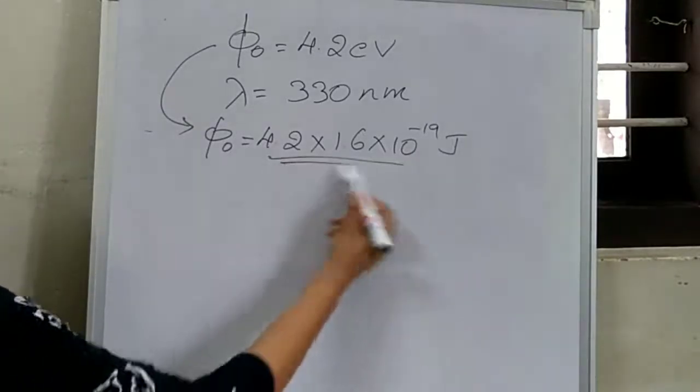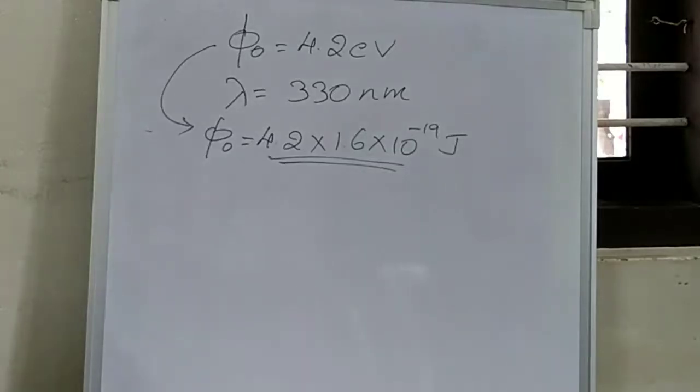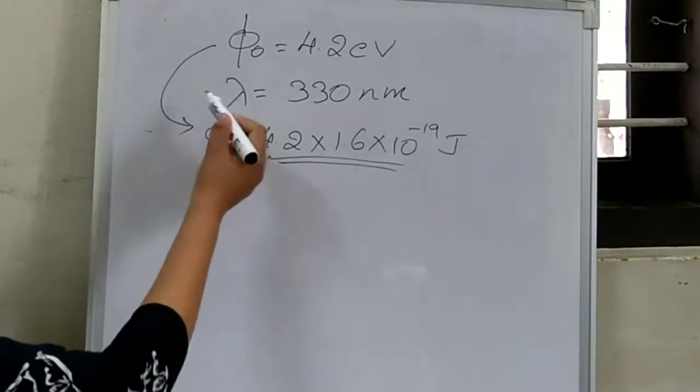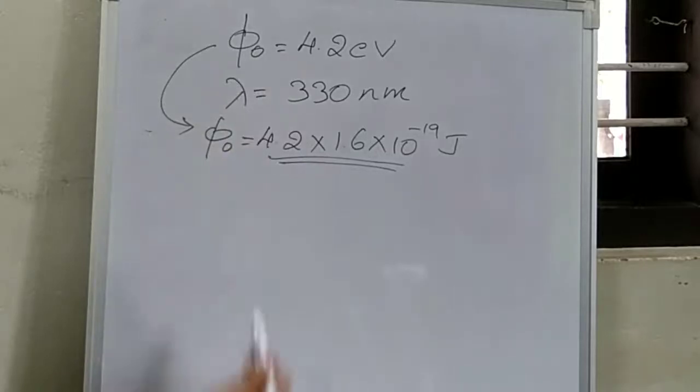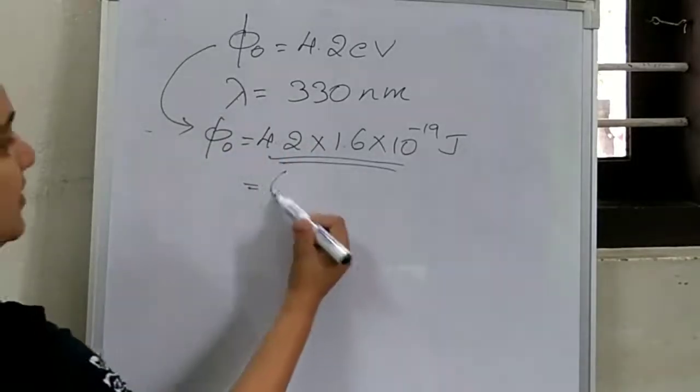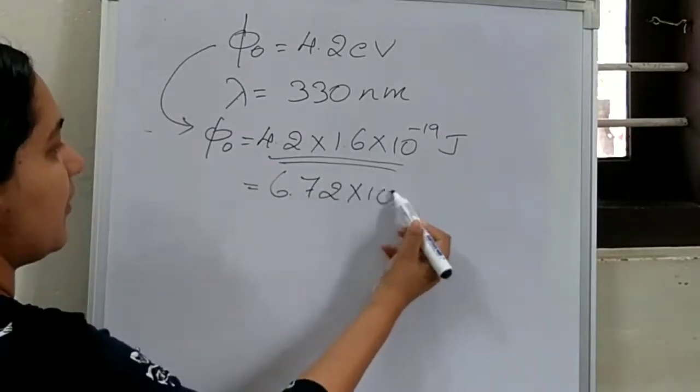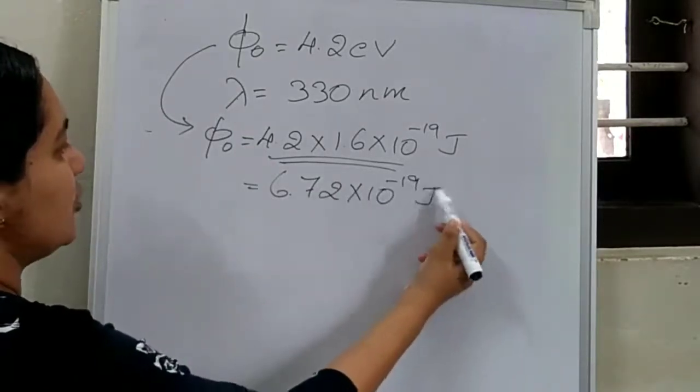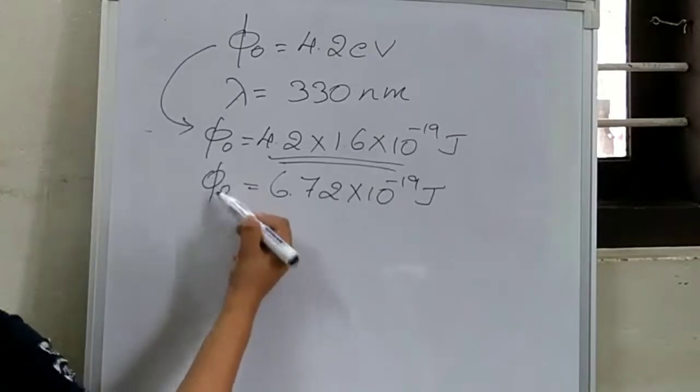The photoelectric emission takes place only if the energy of this incident radiation is greater than this work function. On simplifying this, we will get it as 6.72 into 10 to the power of minus 19 joule. This is the work function.